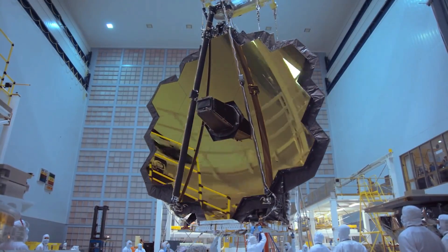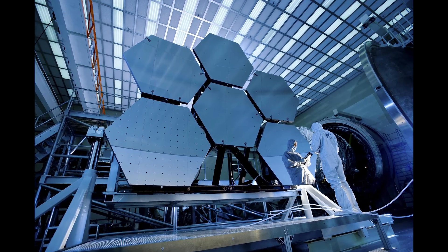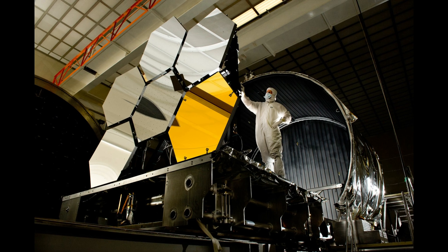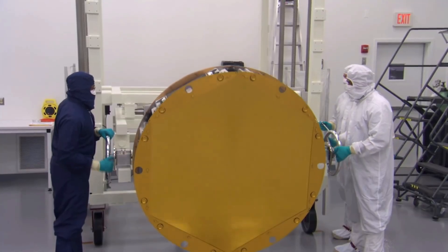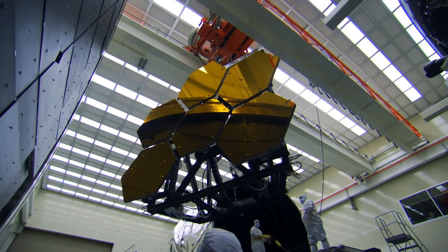The Webb telescope's primary mirror appears gold, but they are actually made out of beryllium. There's a gold coating applied to each of the mirrors because gold is extremely reflective of infrared light, better than both aluminum and silver.